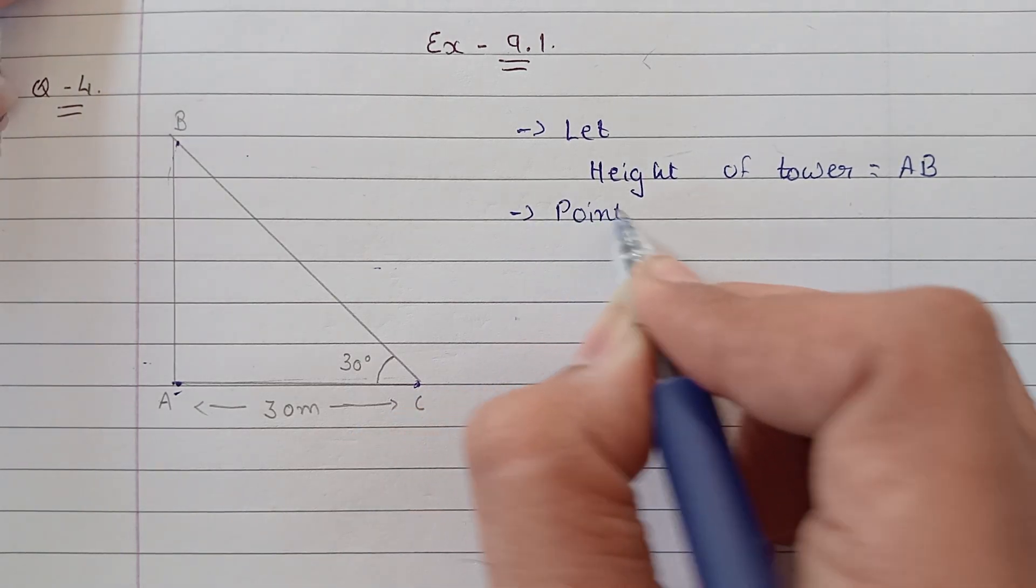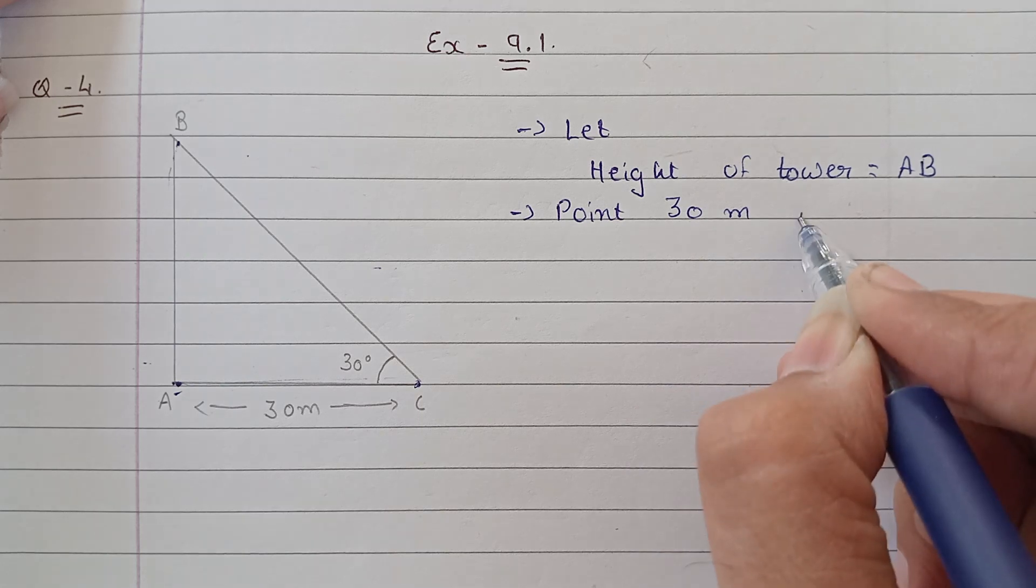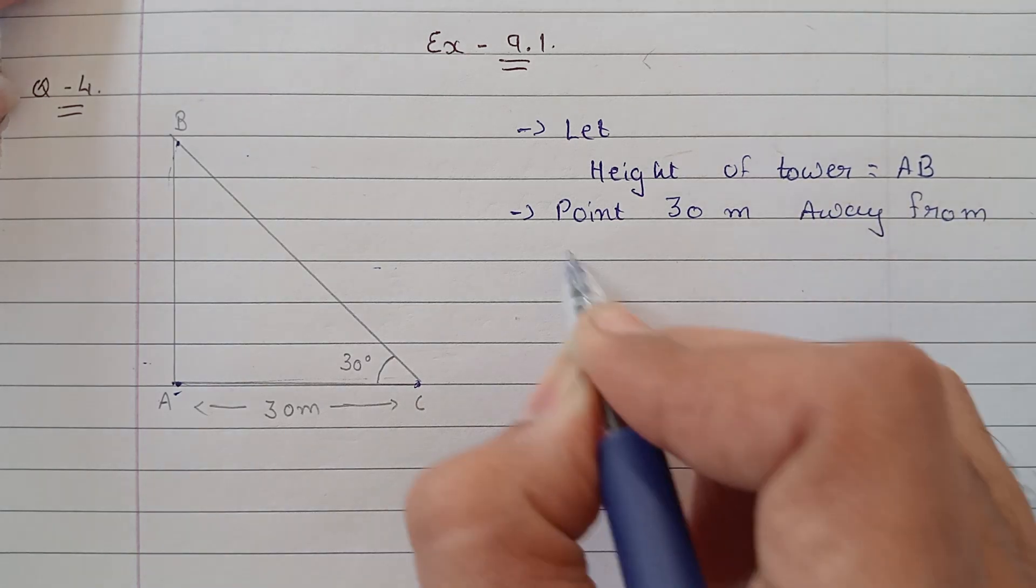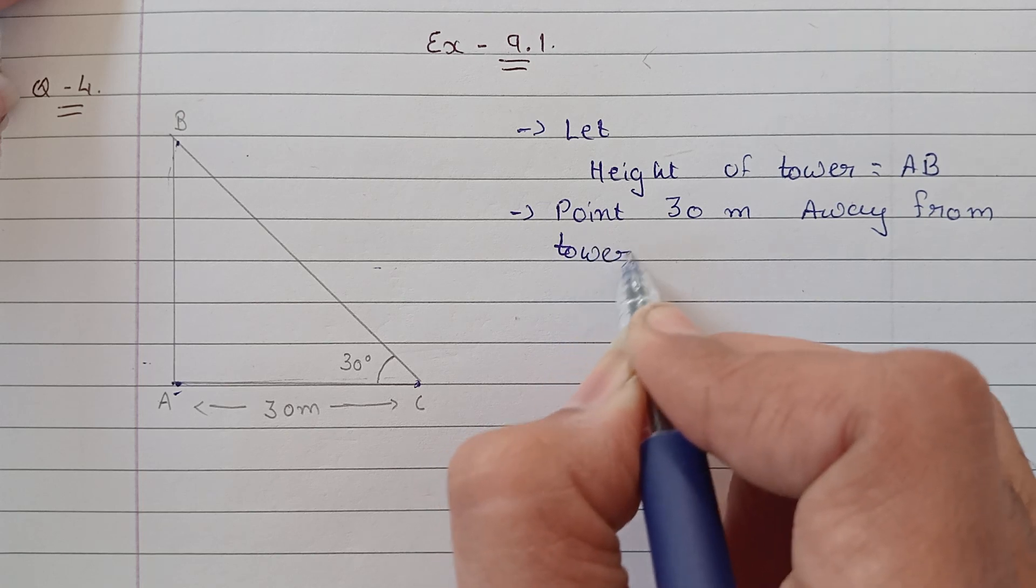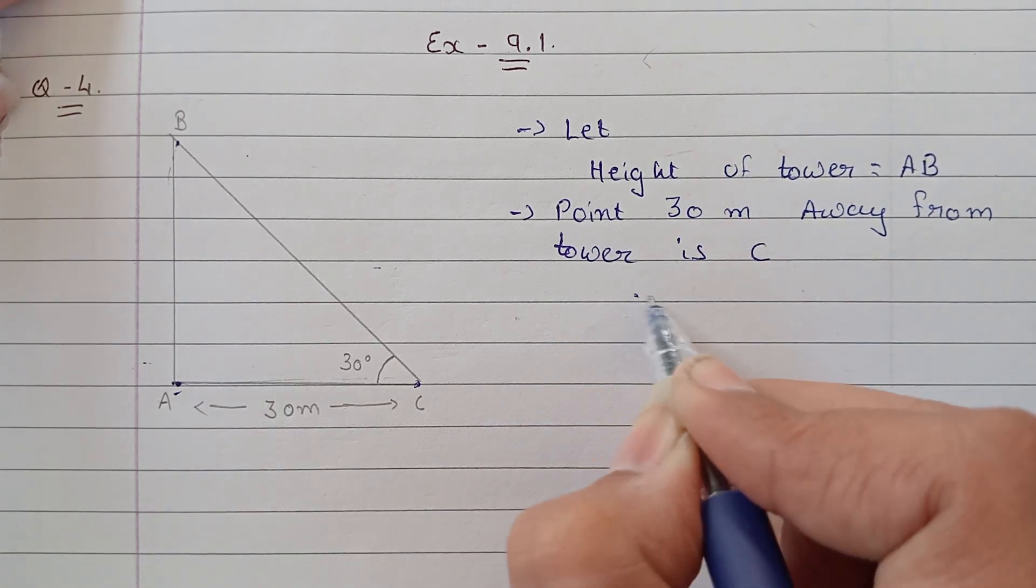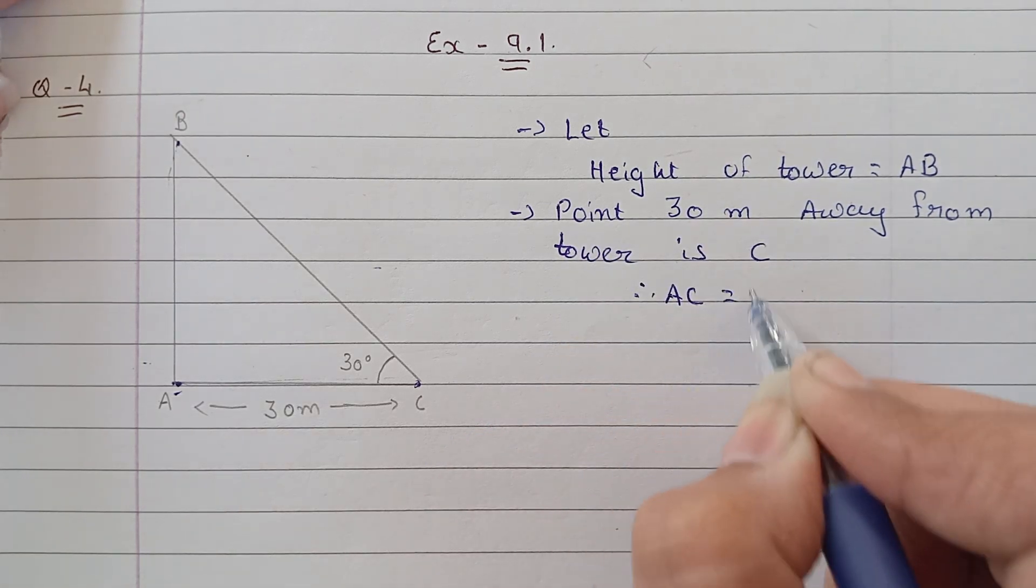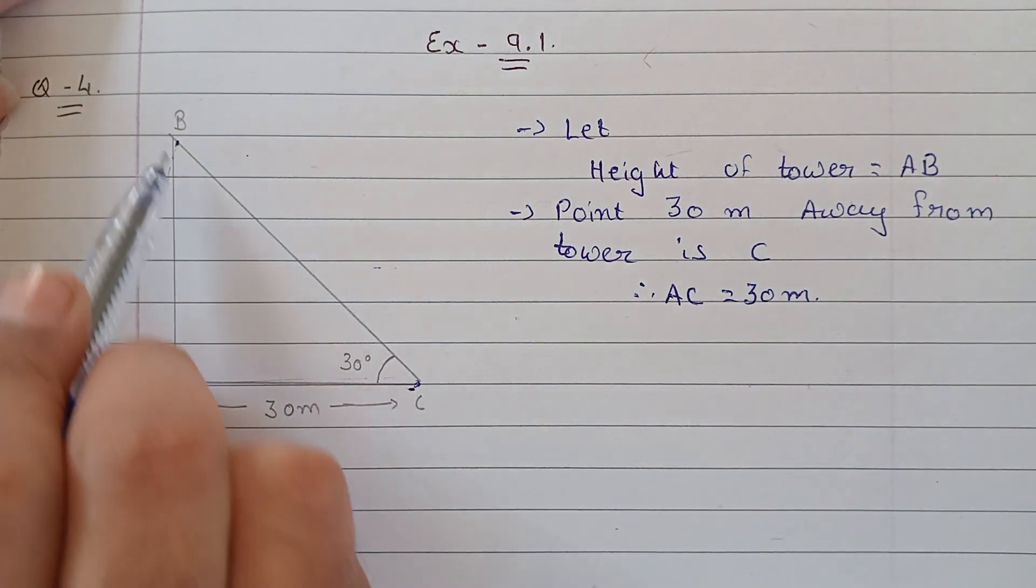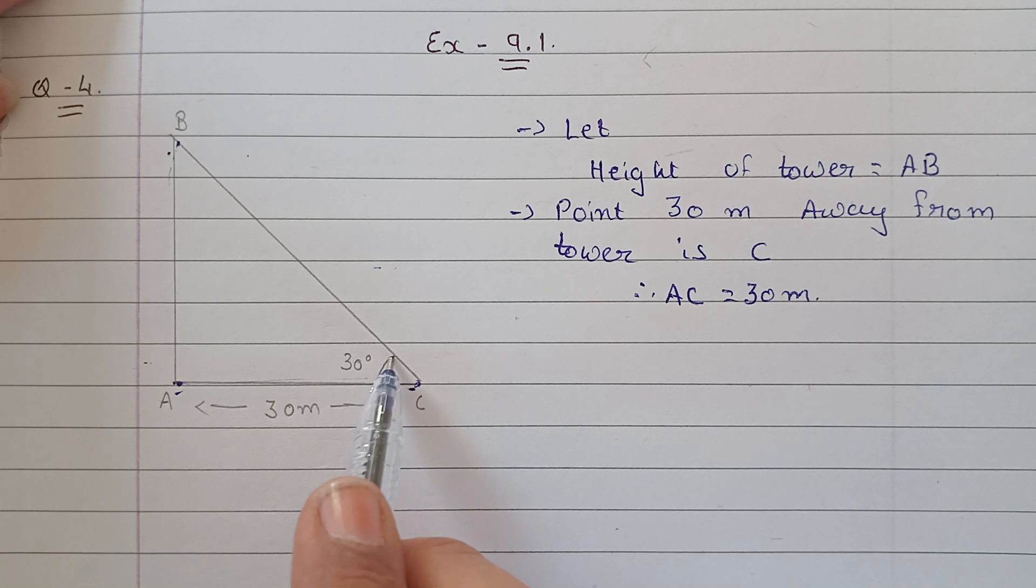Point 30 meters away from tower is C, meaning the distance AC is 30 meters. Now from here we need to observe the tower top, so angle of elevation is 30